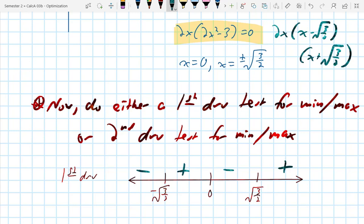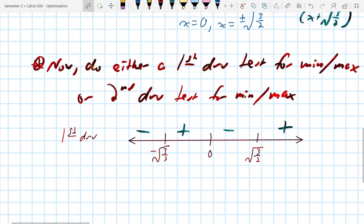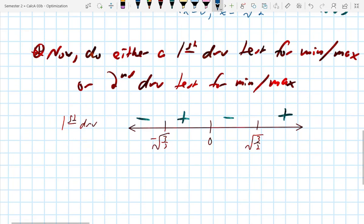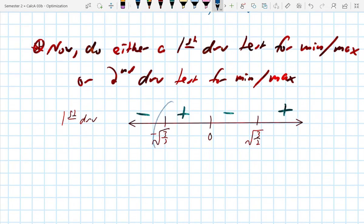So I'm looking for places where the graph goes from decreasing to increasing. Do you see those places? Because I want minimums. That's a minimum, that's a minimum. On an AP exam, if you're trying to show whether a number is a minimum, you have to write out a very wordy statement of since f prime of x is less than 0 when x is less than negative root 3 halves,